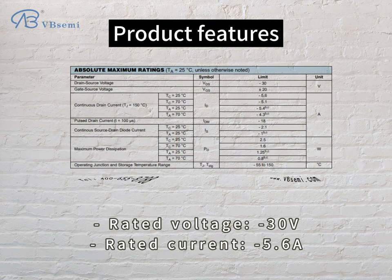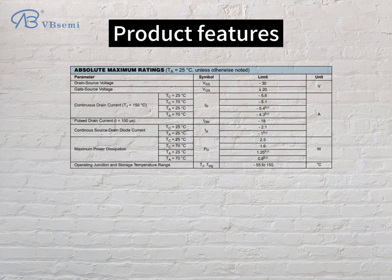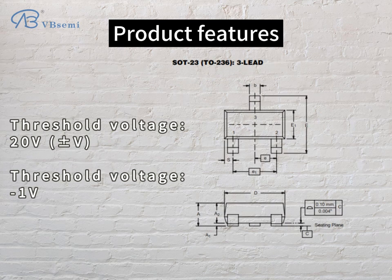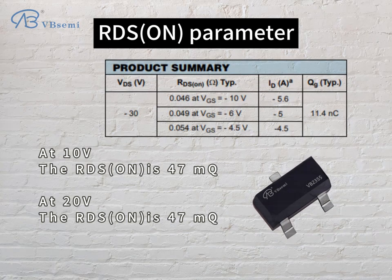Rated voltage: -30V. Rated current: 5.6A. Threshold voltage: -1V. RDS(on) parameter: at 10V, RDS(on) is 47mΩ; at 20V, RDS(on) is 47mΩ.